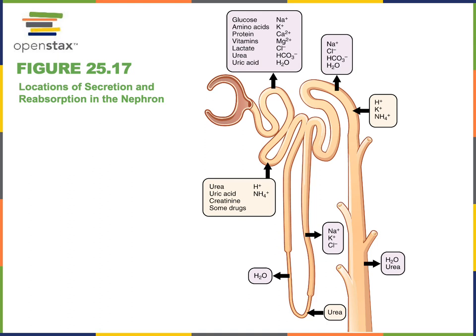The proximal convoluted tubule is responsible for reabsorbing the majority of the liquid that is filtered. Immediately after filtration, the proximal convoluted tubule reabsorbs the majority of the water and essentially all of the glucose, amino acids, and other vitamins and essential nutrients that we want to return to the blood, along with a large amount of sodium. Some water continues into the descending limb of the loop of Henle where additional water reabsorption occurs, before the liquid flows up the ascending limb where large amounts of sodium chloride and potassium are reabsorbed.